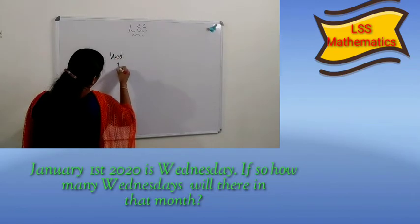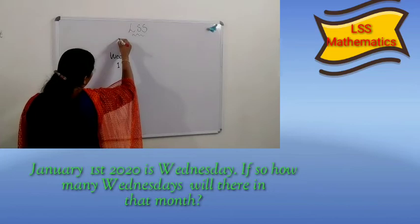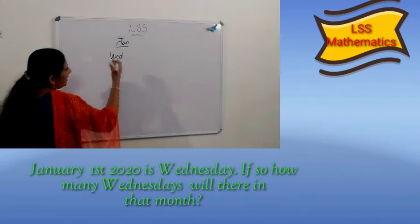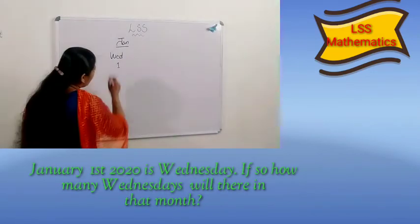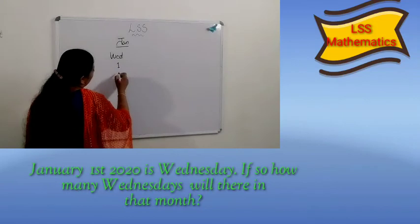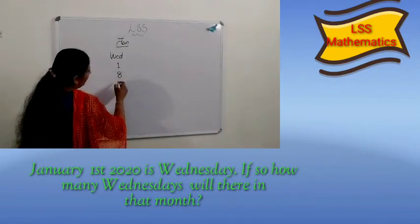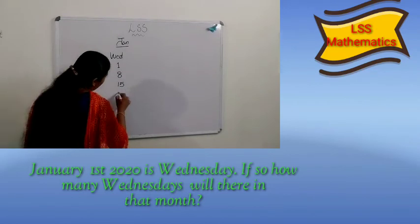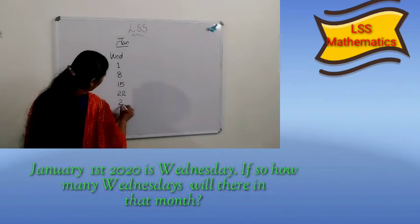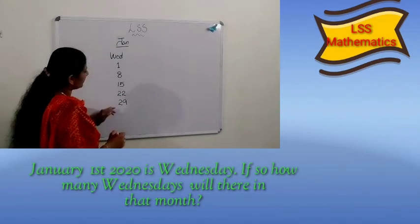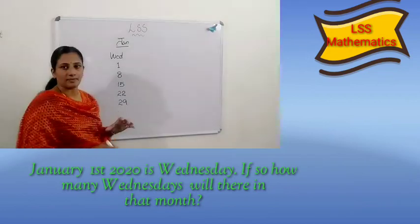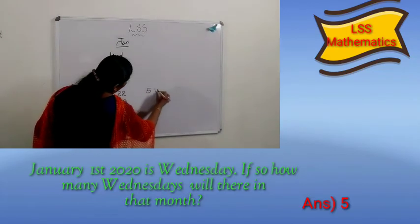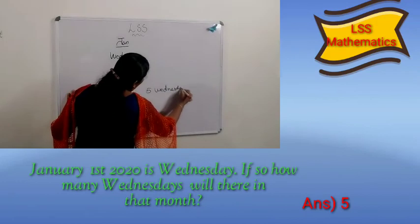So, one Wednesday is given — January 1st. Next Wednesday means how many days after? Yes, 7 days after. So 1 plus 7 is 8. Next, 8 plus 7 is 15. 15 plus 7 is 22. 22 plus 7 is 29. 29 plus 7 goes beyond the month, so that is the end. So we count: 1, 2, 3, 4, 5. There are 5 Wednesdays.